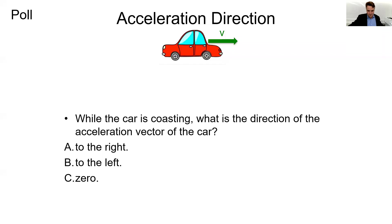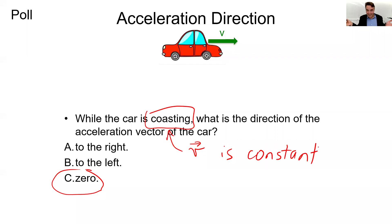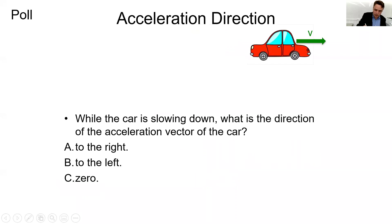75% answered C — zero — and that is the answer. By coasting I meant that V is constant. And if that is the case — perhaps frictionless wheels or something — then the acceleration is zero. That might not have been the best phrased question, but hopefully you get the physics.